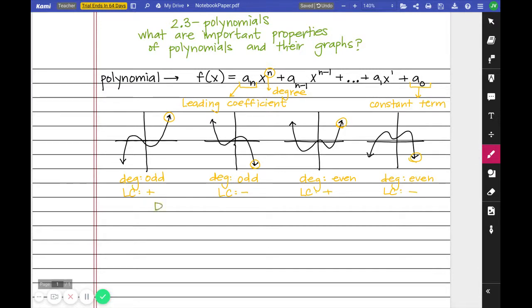So let's lock some words in here. The degree determines the shape. And remember, odd degree, the arrows are going opposite directions. The leading coefficient determines the end behavior or the direction of the right-hand side of the graph. That's what RHS is going to stand for, is right-hand side.